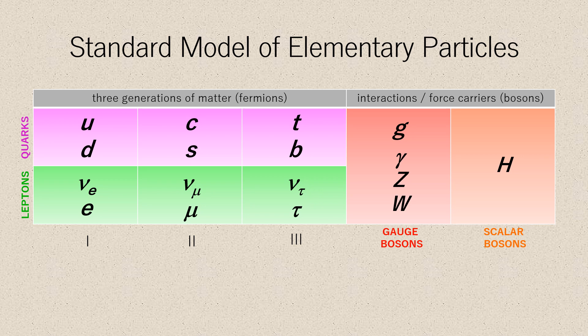There are six quarks: up, down, charm, strange, top, and bottom, and six leptons: electron, electron neutrino, muon, muon neutrino, tau, and tau neutrino.